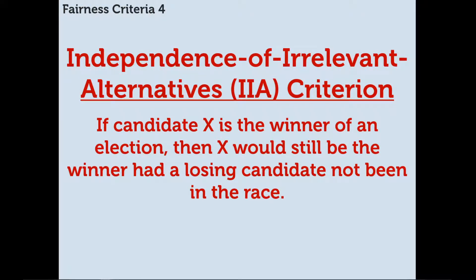The last one is the independence of irrelevant alternatives, or IIA criterion, which states that if candidate X is the winner of an election, then X would still be the winner had a losing candidate not been in the race. So if you count the votes and X is the winner, and then a losing candidate drops out and you recount the votes, X should still be the winner.